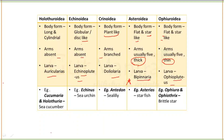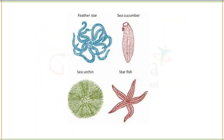For examples: Holothuroidea includes Cucumaria or Holothuria, known as sea cucumber. Echinoidea includes Echinus, known as sea urchin. Crinoidea includes Antedon, known as sea lily. Asteroidea includes Asterias, the starfish. And Ophiuroidea includes Ophiura, known as brittle star. So examples of Echinodermates include sea cucumber, starfish, sea urchin, and feather star.